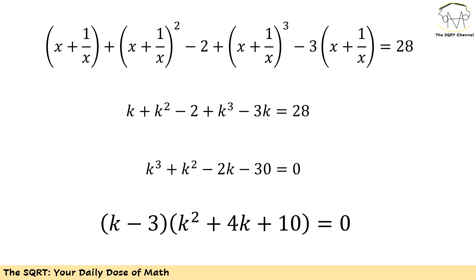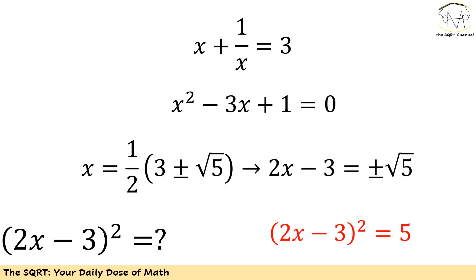Remember when we say no solution it means no real solution, because in the problem we assume that x is going to be real. Now k or x plus 1 over x is 3, and if we rearrange it we will see that x squared minus 3x plus 1 is 0.